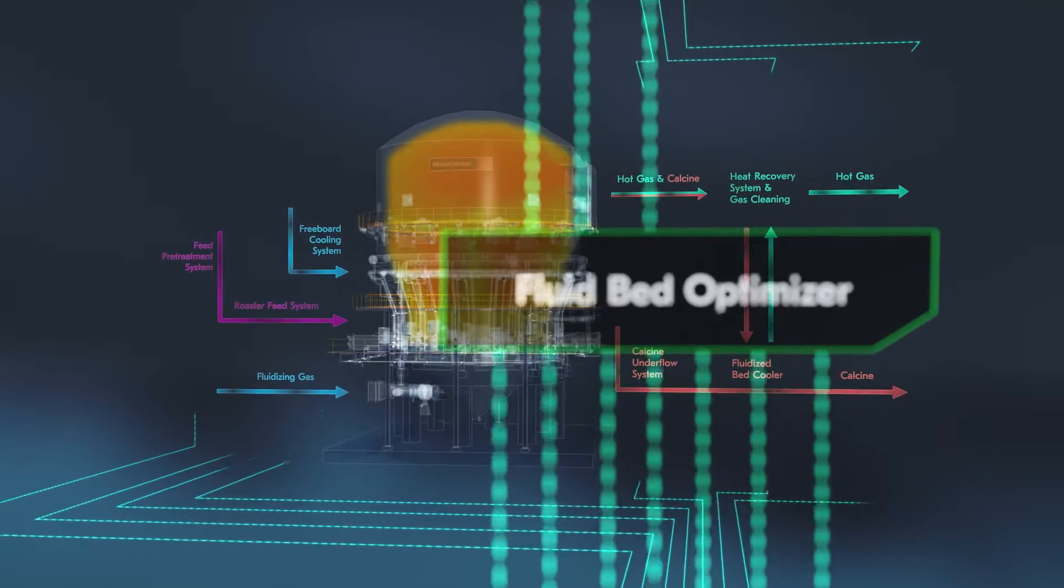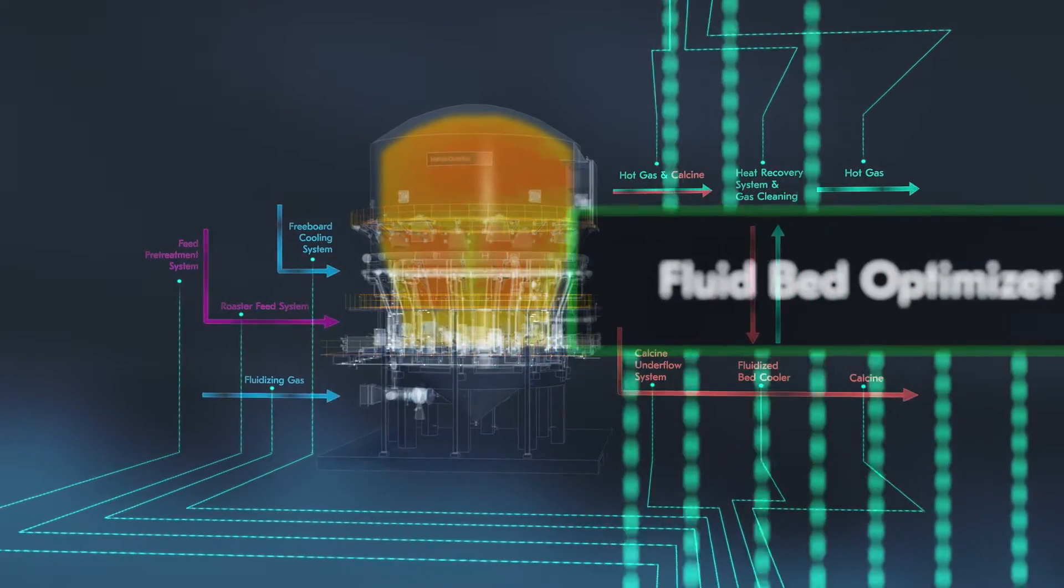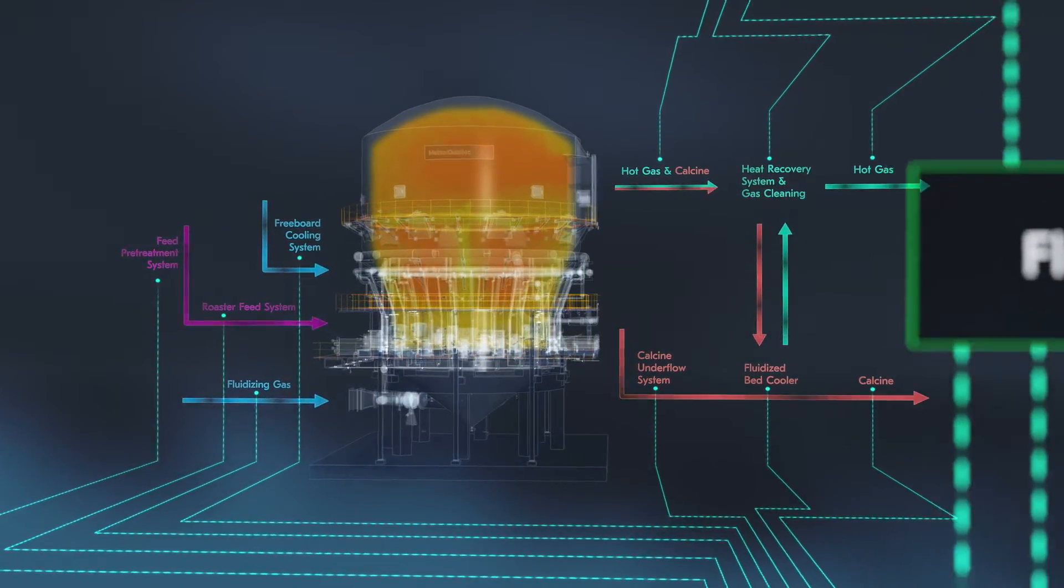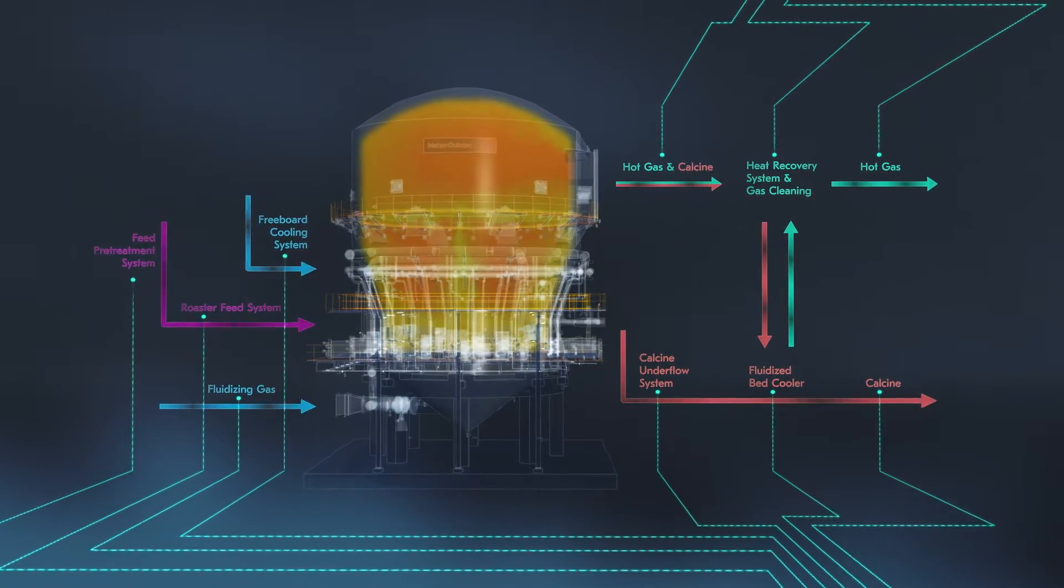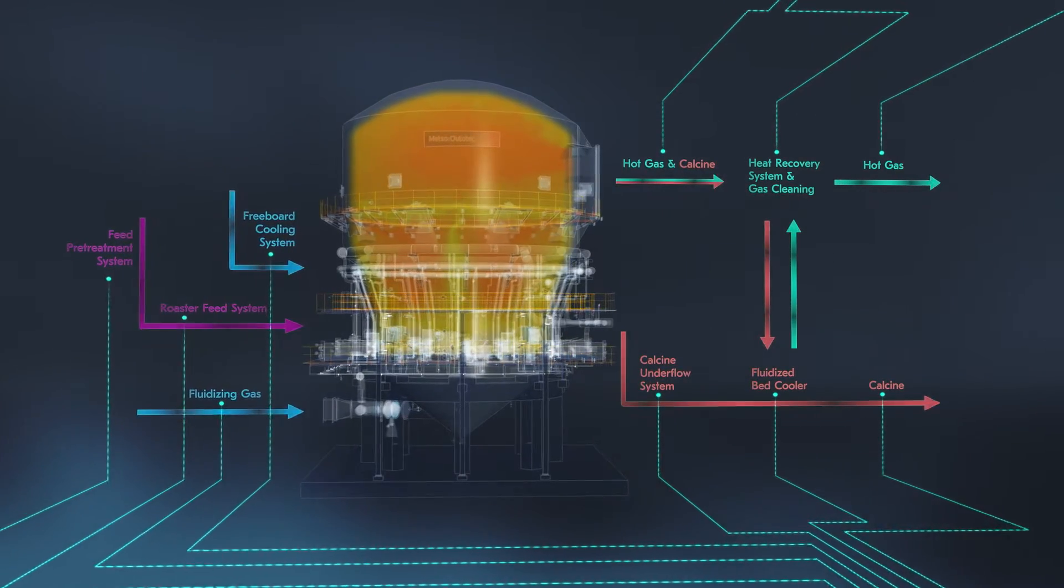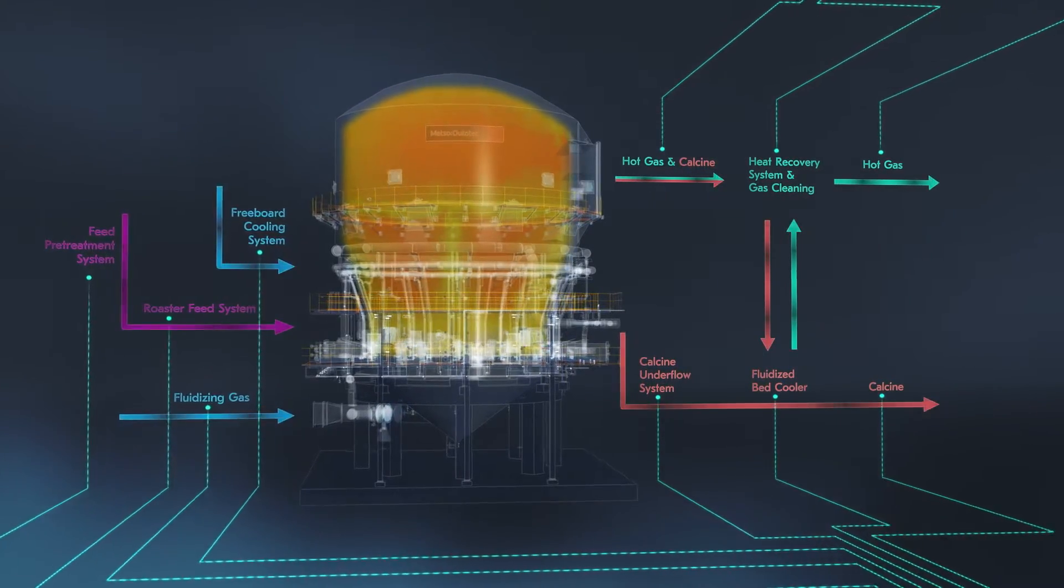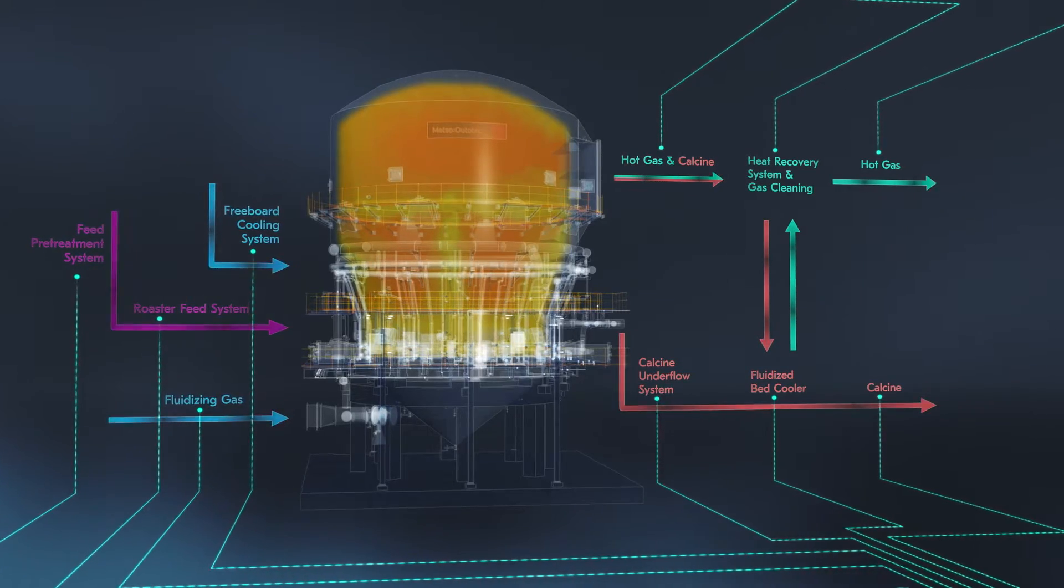The tool connects to your plant's distributed control system and keeps track of various process variables. The system will identify the optimum operating conditions for your fluid bed reactor, including upstream and downstream plant areas.